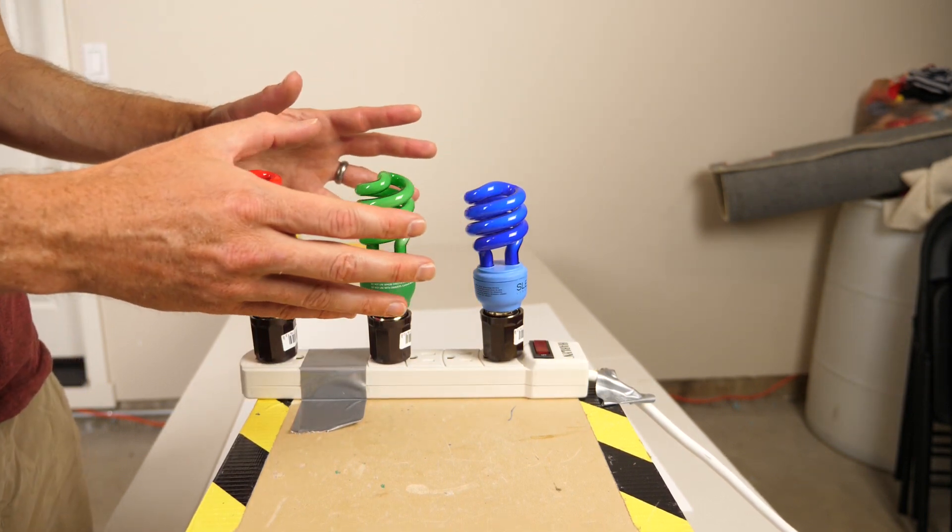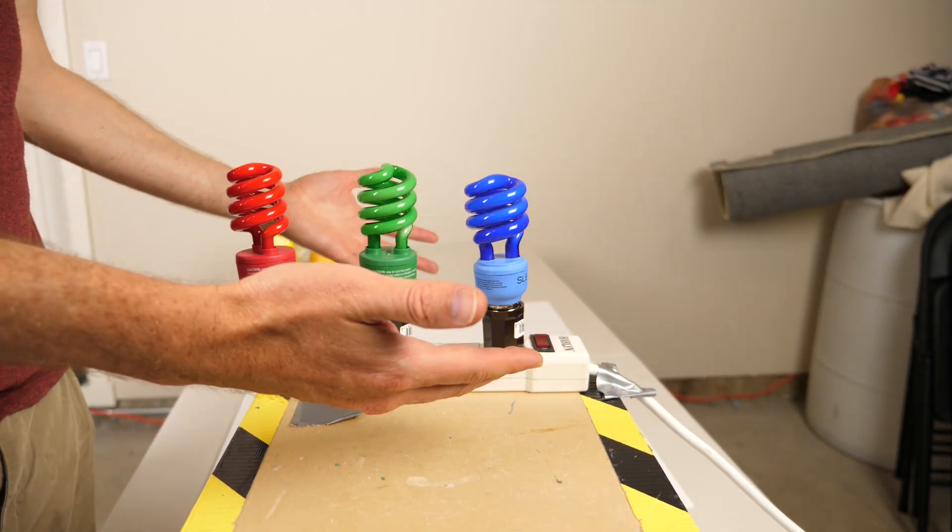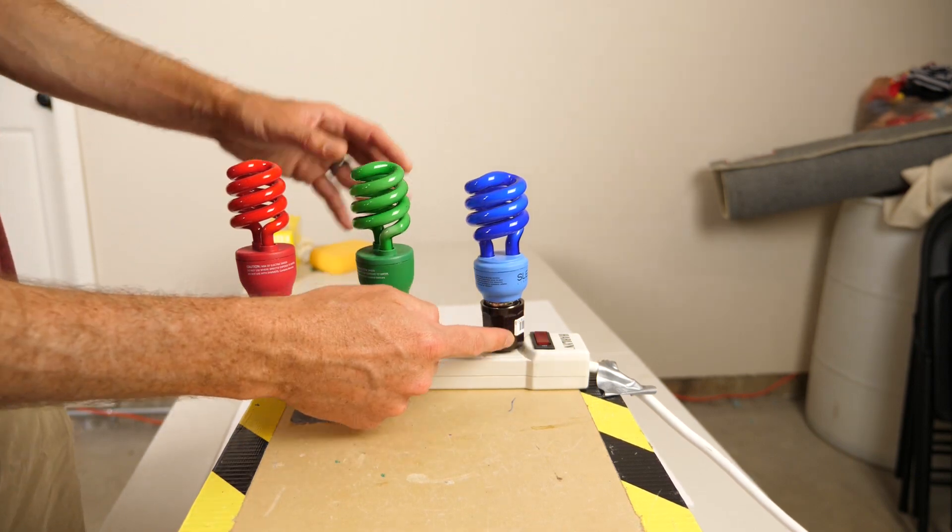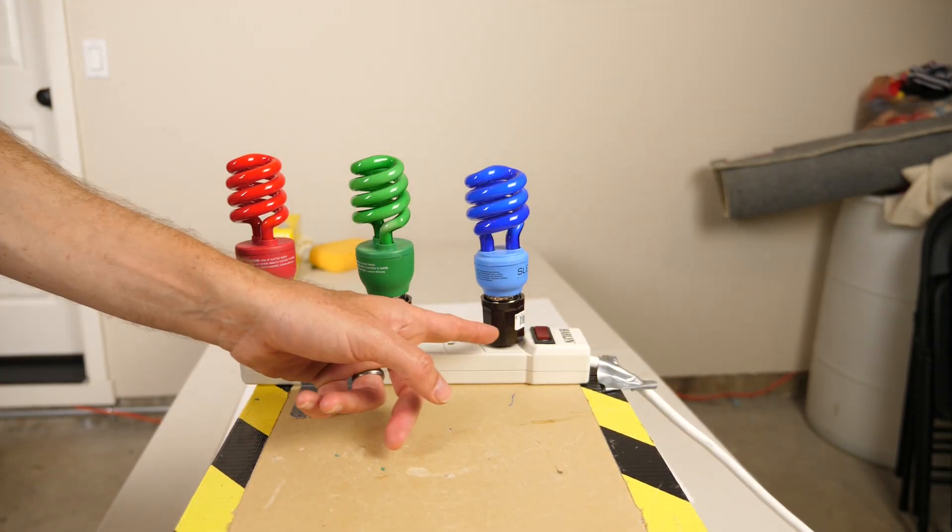So this brings me to my next point actually. Not only are shadows not black, but actually nothing is really black. For example, this looks black, but this isn't even black either. It's just less white than this.